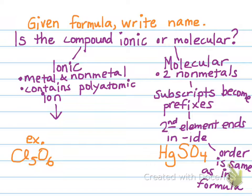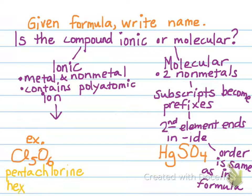Let's try Cl₂O₆. Is this compound ionic or molecular? It's molecular — chlorine is a non-metal, oxygen is a non-metal. So subscripts become prefixes and the second element ends in -ide, keeping the same order as the formula. The prefix for 2 is di, Cl is chlorine; the prefix for 6 is hexa, O becomes oxide. So this is dichlorine hexoxide — I have no idea if that compound actually exists, but that's our example.